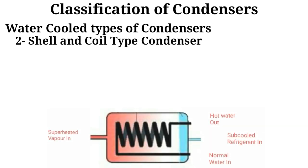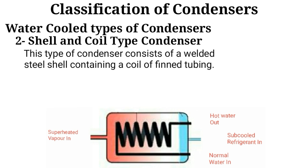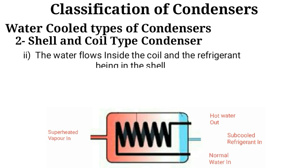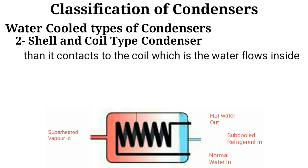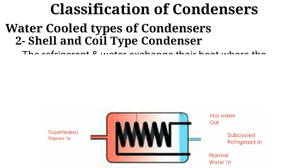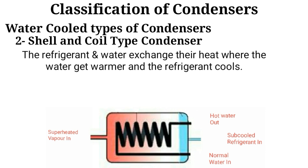The shell and coil type condenser consists of a welded steel shell containing a coil of finned tubing. Water flows inside the coil and the refrigerant is in the shell. When the refrigerant enters from the inlet side of the shell in hot vapor form, it contacts the coil through which water flows. The refrigerant and water exchange their heat — the water gets warmer and the refrigerant cools.